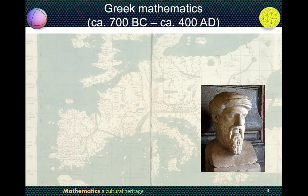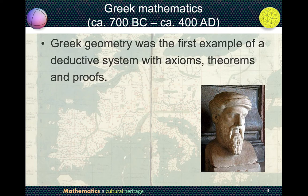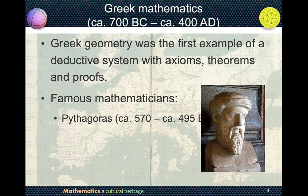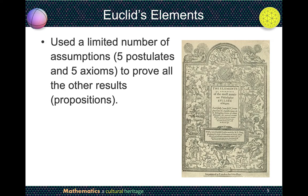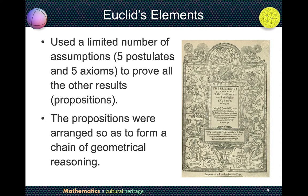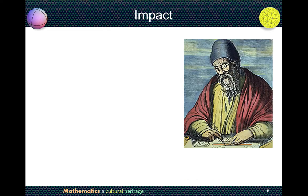Greek mathematics was different from the other civilizations. Greek geometry was the first example of a deductive system, with axioms, theorems, and proofs. Famous mathematicians include Pythagoras and Euclid. Euclid's Elements has 13 books. It used a limited number of assumptions — 5 postulates and 5 axioms — to prove all other results. The propositions were arranged to form a chain of geometric reasoning, all proved rigorously, proposing a concept of formal proofs.